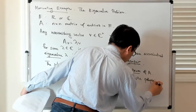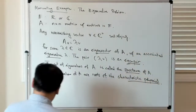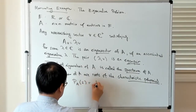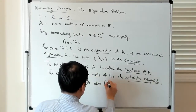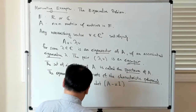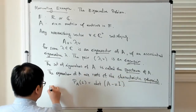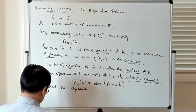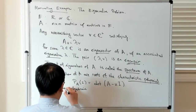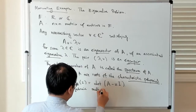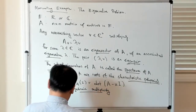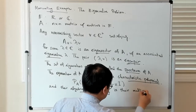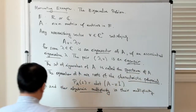So let's denote this as P of A. It depends on Z. It's just the determinant of A minus Z times the identity. And the algebraic multiplicity is just the multiplicity of zeros of P_A.